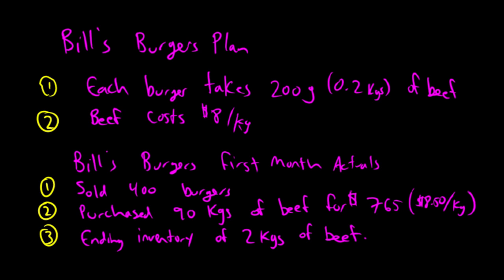For him, the perfect burger is going to take 200 grams of direct material. 200 grams, thankfully metric is nice and easy, converts into 0.2 kilograms of beef. Beef costs $8 a kilogram. Well, that's what it cost when he was planning. And so, with those planning numbers, he said to himself, it's $8 a kilogram, it takes 0.2 kilograms.